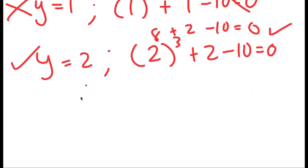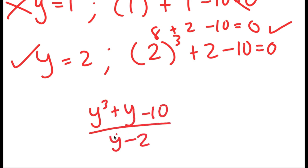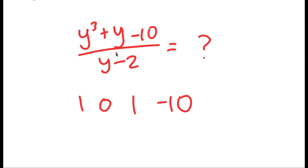I'm going to divide y cubed plus y minus 10 by y minus 2 using synthetic division. I look at the coefficients of the numerator: 1 for y cubed, 0 for y squared (since there's no y squared term), 1 for y, and negative 10. I place these with 2 on the side. Note the 0 is there because we go in order and there is no y squared term.